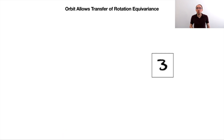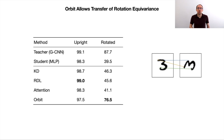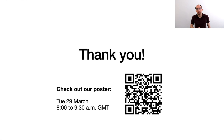ORBIT can also model more complex affine transformations, allowing us to transfer different types of equivariance, like rotation equivariance for example. We evaluate this on transfer between a group convolutional teacher and an MLP student, and the results show that we again outperform all established functional transfer methods by a large margin. If you are interested in learning more about this project, please check out our poster on Tuesday.